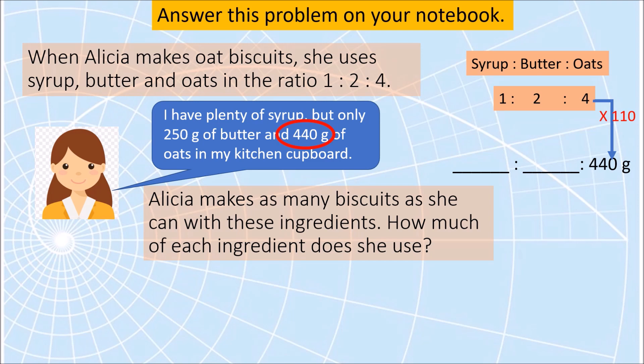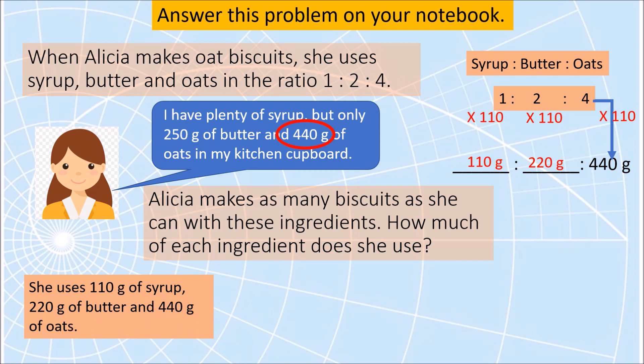Yes, that's 110. So we will multiply the other parts by 110. 110 times 1 is 110 grams, 110 times 2 is 220 grams. This tells us that she uses 110 grams of syrup, 220 grams of butter and 440 grams of oats. Now we have to check that this is possible with the given amount of butter in Alicia's cupboard.